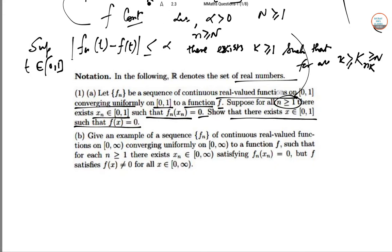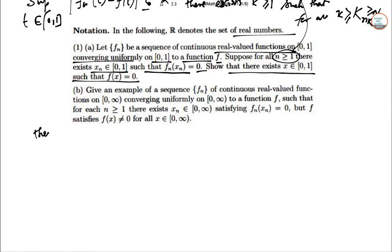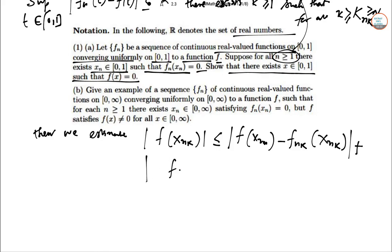So then we estimate that F of Xn of K mod less than equal to the difference. So Xn of K, Fn of K, Xn subscript K plus Fn of K, Xn of K, this is less than equal to supremum of T belongs to [0,1], this is Ft minus Fnk, T less than this value alpha.